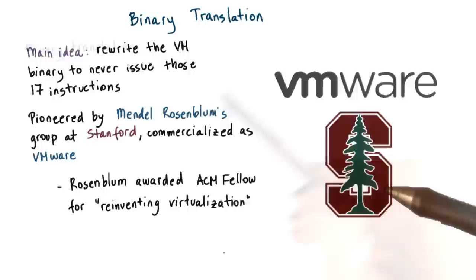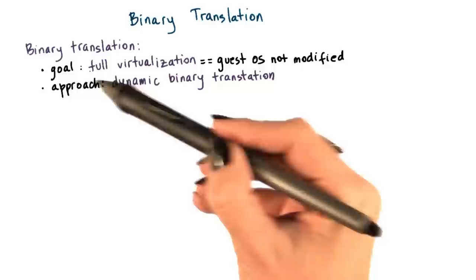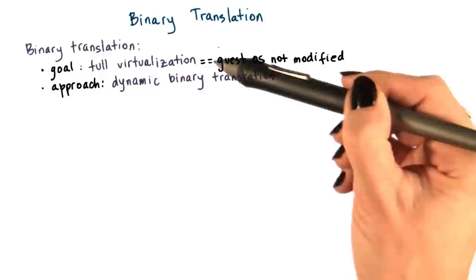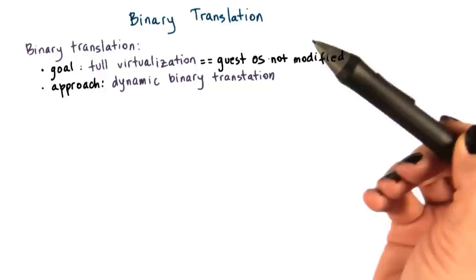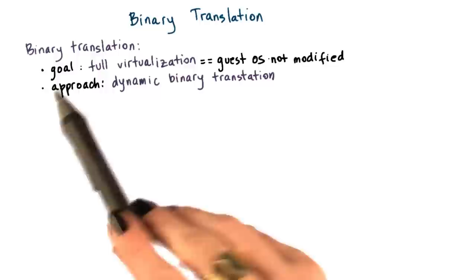Binary translation aims to run unmodified guest operating systems, meaning we don't need to install any special drivers or policies to change the guest OS. As a startup, they clearly couldn't tell Microsoft to modify Windows. This type of virtualization where the guest OS is not modified is called full virtualization.